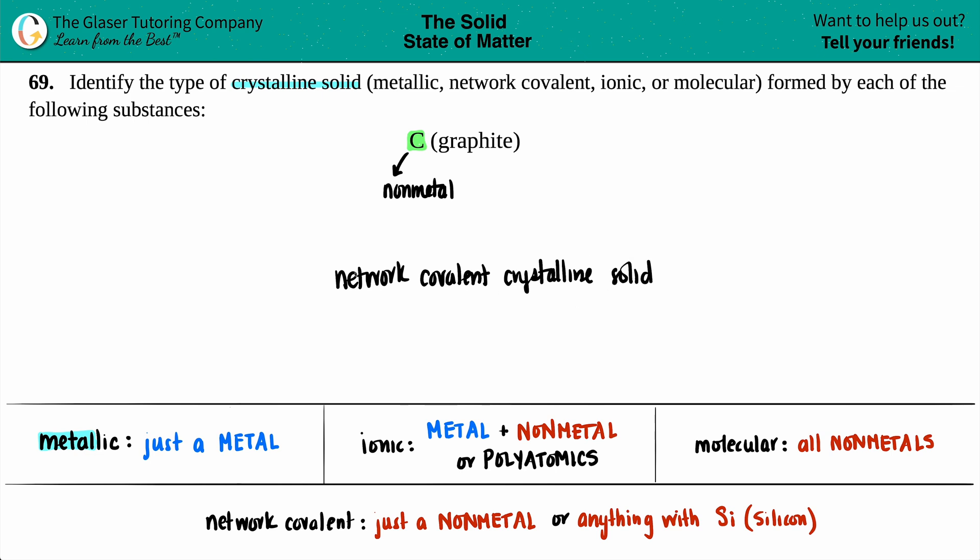Let's box this off. Just know that the other criteria for being a network covalent crystalline solid is if you start seeing silicon. Here we didn't have any silicon. To reinforce that it is not the molecular one, you needed to see more than one non-metal, which we didn't see here. We just had the one non-metal.